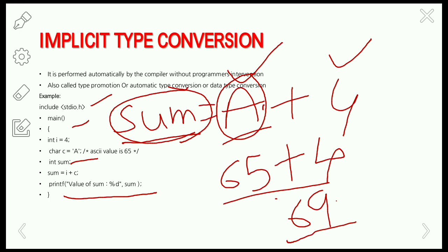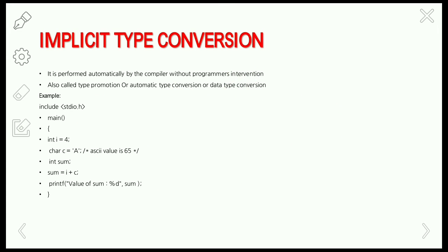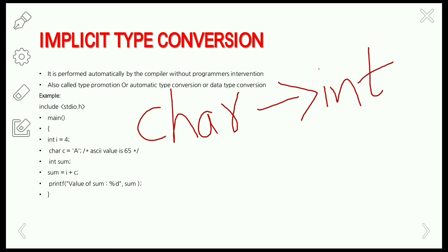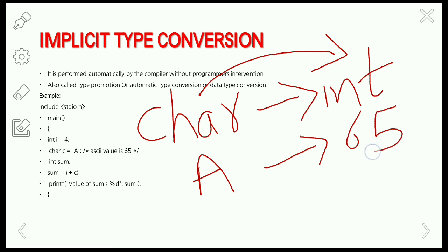The character type is of lower range and integer type is of higher range, so the compiler promotes the character to integer type. That is why it is called type promotion — the compiler converts the character 'a' to its integer ASCII value 65. This is also called automatic type conversion or data type conversion, done entirely by the compiler.